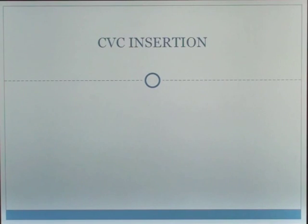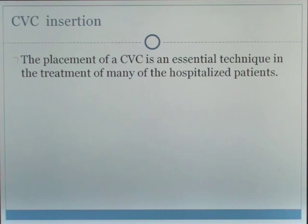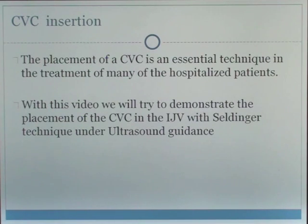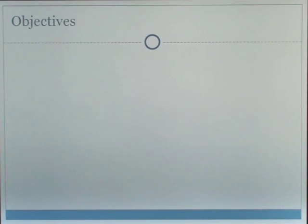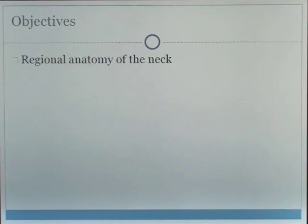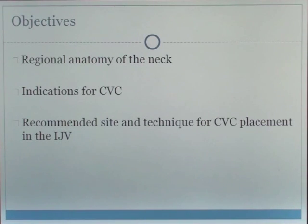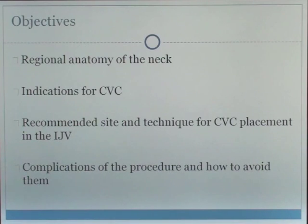The placement of a central venous catheter is an essential technique in the treatment of many hospitalised patients. With this video, we will demonstrate the placement of a central venous catheter into the internal jugular vein using several variations of the Seldinger technique under ultrasound guidance. We will demonstrate and review the regional anatomy of the neck, indications for insertion of a central line, recommended site and technique, and complications of the procedure and suggestions on how to avoid them.